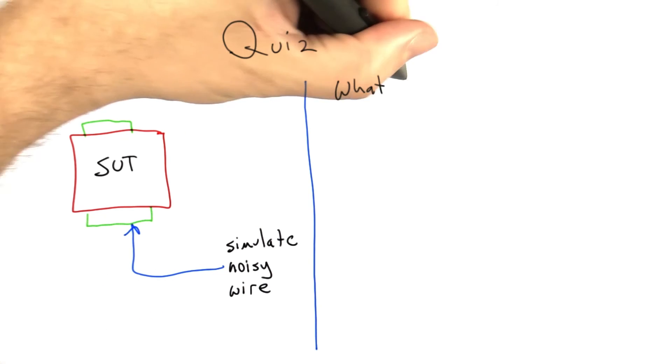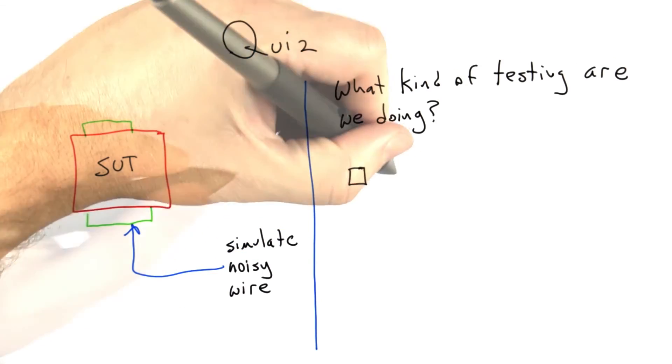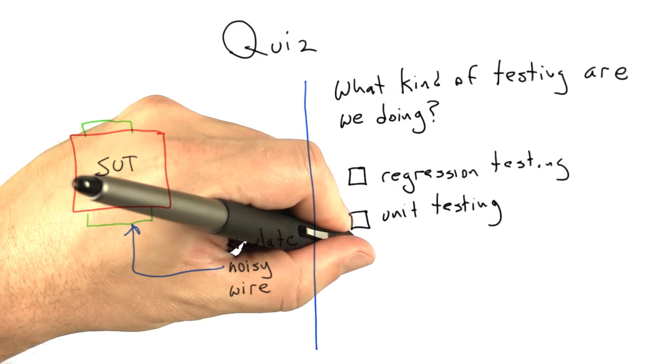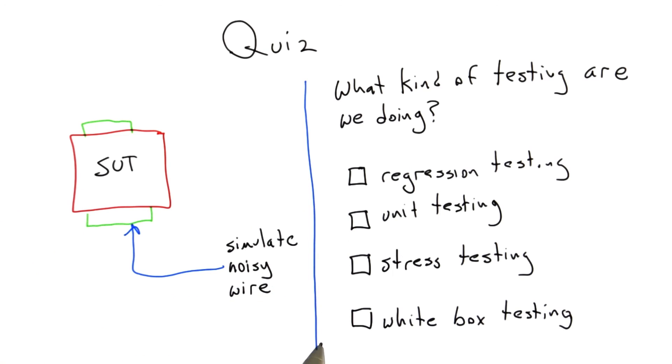And so the question is, what kind of testing are we doing? And your choices are regression testing, unit testing, stress testing, or white box testing. So please right now, click the box that best describes what we're doing.